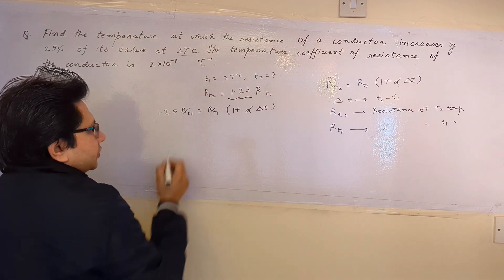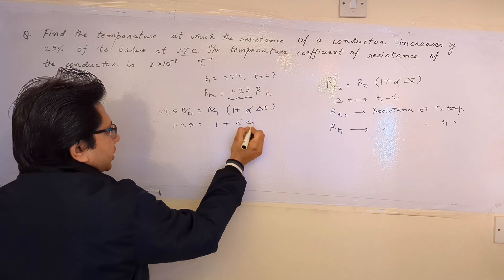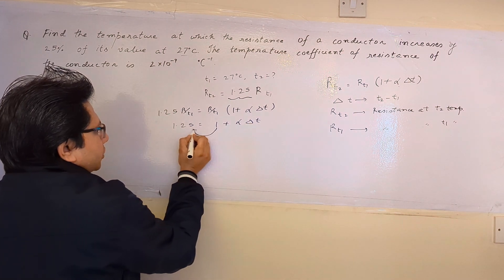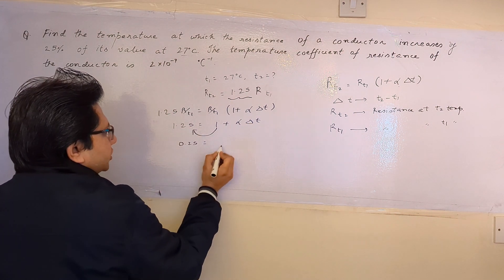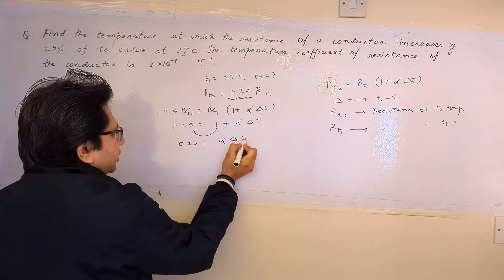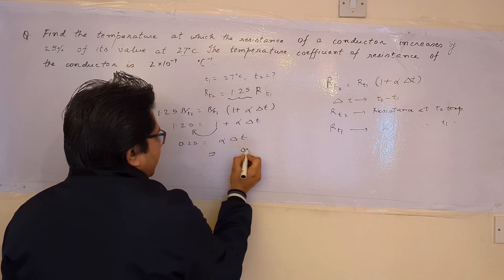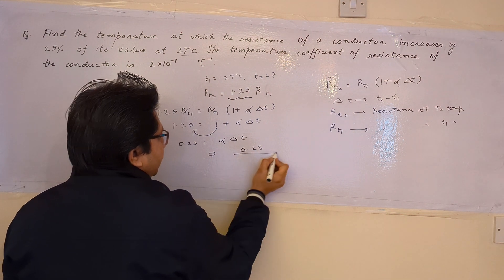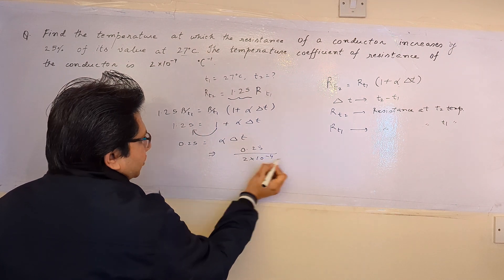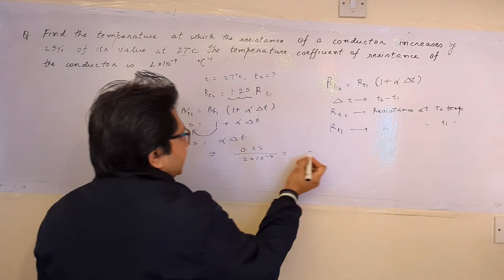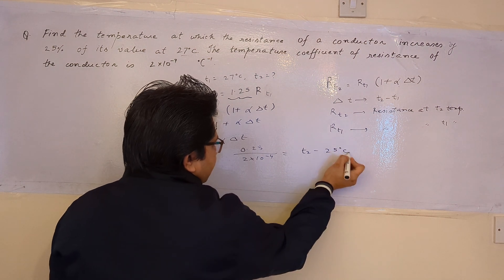R_T1 cancels on both sides, giving 1.25 equals 1 plus alpha delta T. Taking 1 to the left side, we get 0.25 equals alpha delta T. So it implies delta T equals 0.25 divided by alpha, where alpha is given as 2 into 10 raised to the power minus 4, and delta T is the final temperature minus the initial temperature.